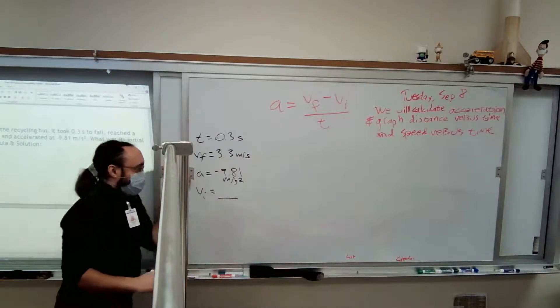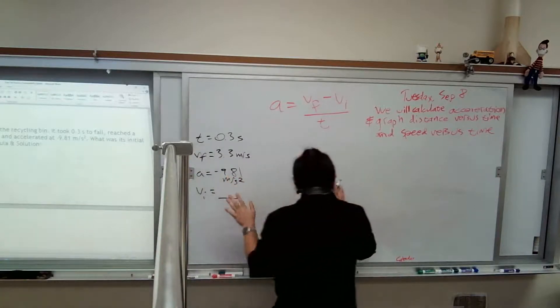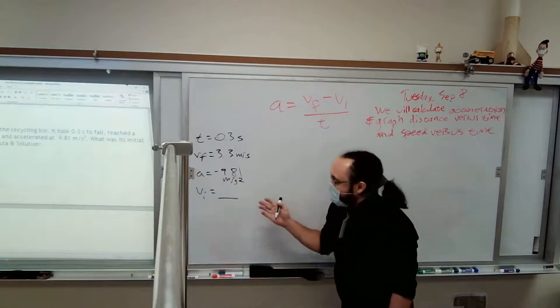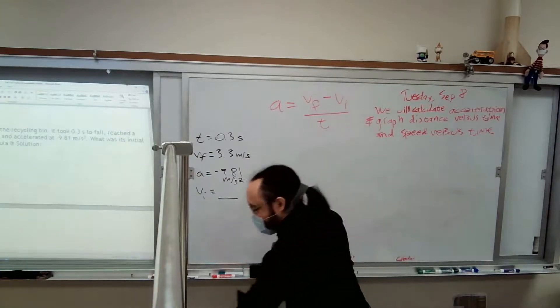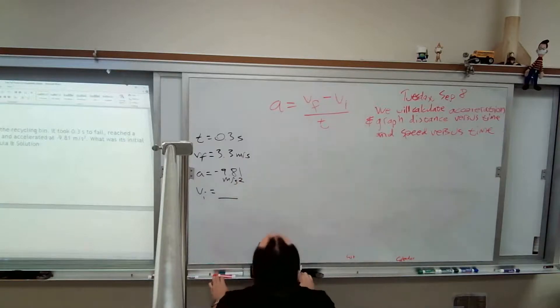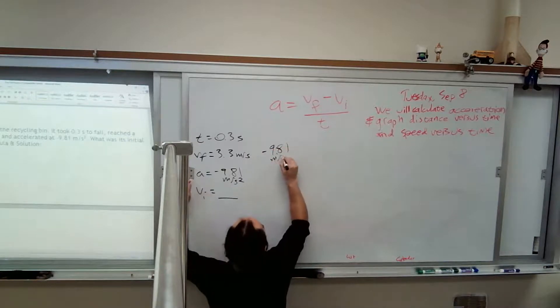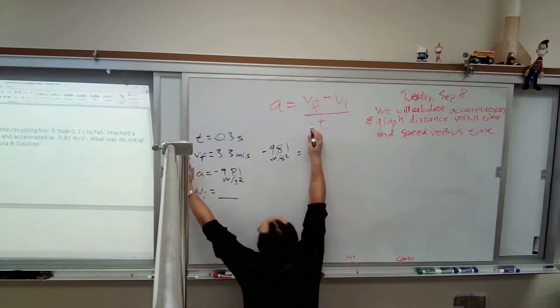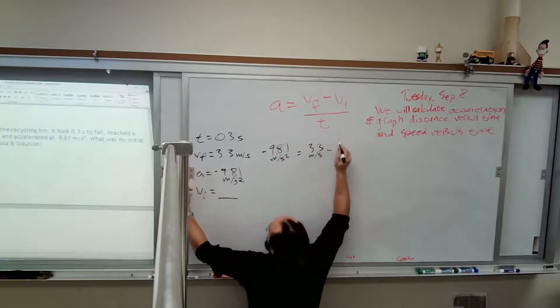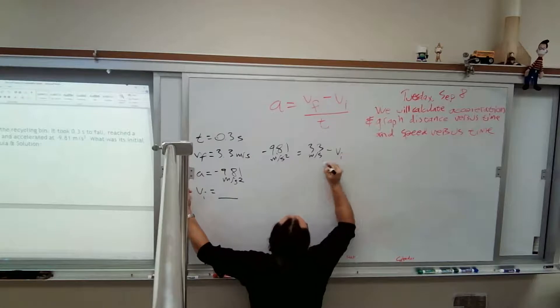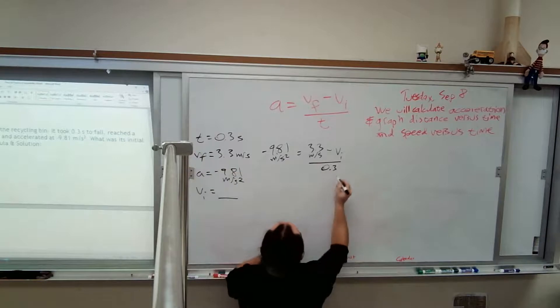You can kind of see we've got four variables in each of these now. It's going to be a better idea, a little bit more useful to keep everything organized. So I've got my four variables up here. I've got my four variables right here. Now I can plug them in. Acceleration is negative 9.81 meters per second squared. Final velocity is 3.3 meters per second. Initial velocity is what we're solving for. And time is 0.3 seconds.